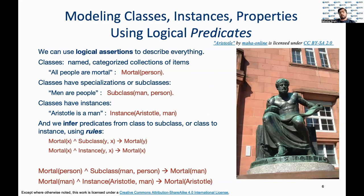There is a whole subfield of artificial intelligence called knowledge representation, which is based on logical assertions. As an example, 'people are mortal' is a logical assertion. Based on these assertions and the relationships that they encode, we can infer additional predicates. Here, we can conclude that Aristotle is mortal since he is a man, which is a subclass of person, and persons are mortal. These are the underpinnings of knowledge representation, and there are multiple ways of codifying these assertions — this one is at the level of logical constraints.